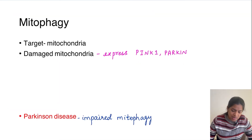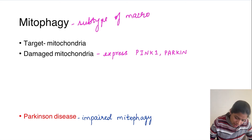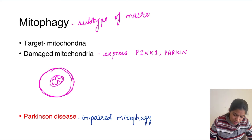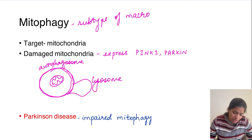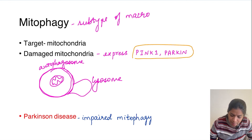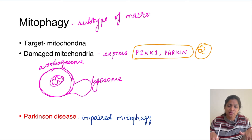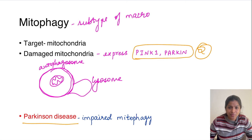Next, mitophagy — a subtype of macroautophagy wherein the target organelle is the mitochondria. A damaged mitochondria triggers autophagosome formation around it, which then fuses with a lysosome forming an autophagolysosome, and the mitochondria gets degraded. Damaged mitochondria express proteins called Pink-1 and Parkin, which trigger mitophagy. Mitophagy has been implicated in Parkinson's disease, which is a neurodegenerative disorder, wherein there is impaired mitophagy — the Parkin and Pink-1 genes have been implicated.